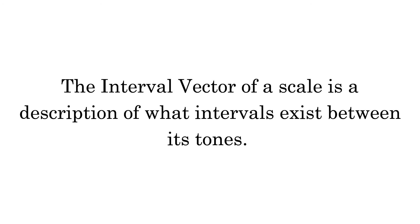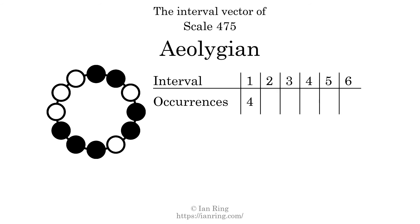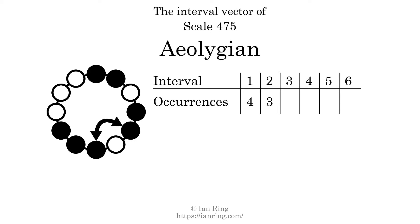The interval vector of a scale is a description of what intervals exist between its tones. There are four intervals with the size of one semitone. There are three intervals with the size of two semitones. There are four intervals with the size of three semitones.